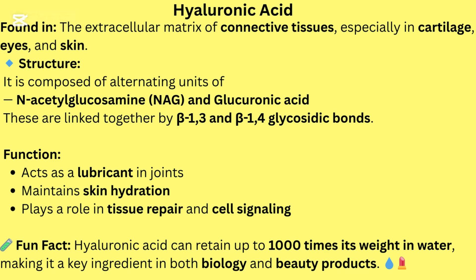Hyaluronic acid is found in the extracellular matrix of connective tissues, especially in cartilage, eyes, and skin. Structure: composed of alternating units of N-acetylglucosamine (NAG) and glucuronic acid, linked together by beta-1,3 and beta-1,4 glycosidic bonds. Function: acts as a lubricant in joints, maintains skin hydration, and plays a role in tissue repair and cell signaling. Fun fact: hyaluronic acid can retain up to 1,000 times its weight in water, making it a key ingredient in both biology and beauty products.